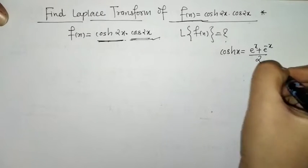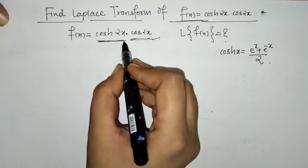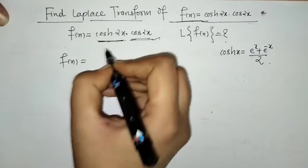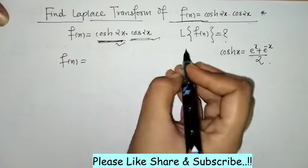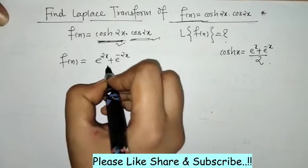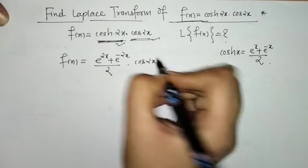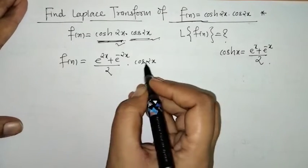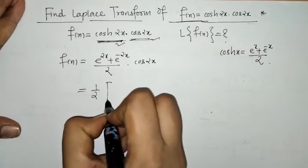So here we can write f(x) equals cosh(2x) as e^(2x) plus e^(-2x) divided by 2, and this is multiplied by cos(2x).